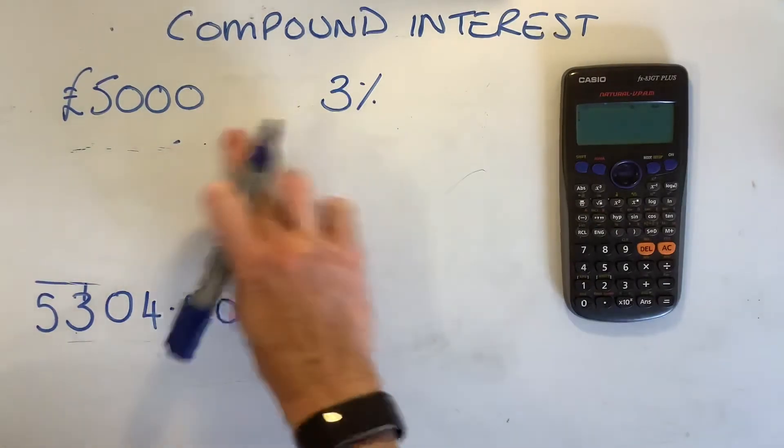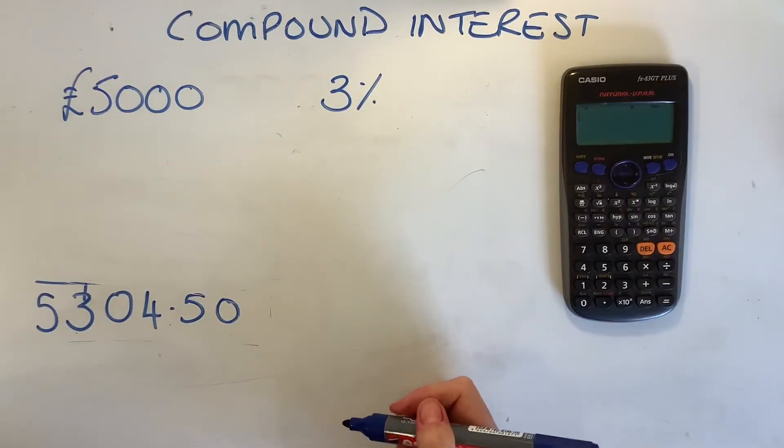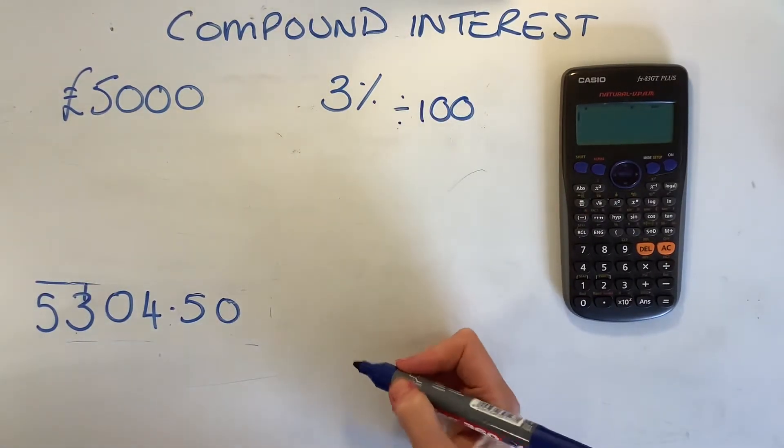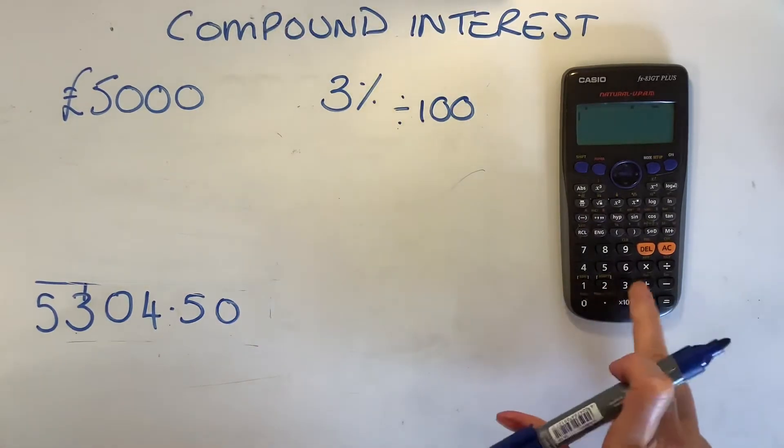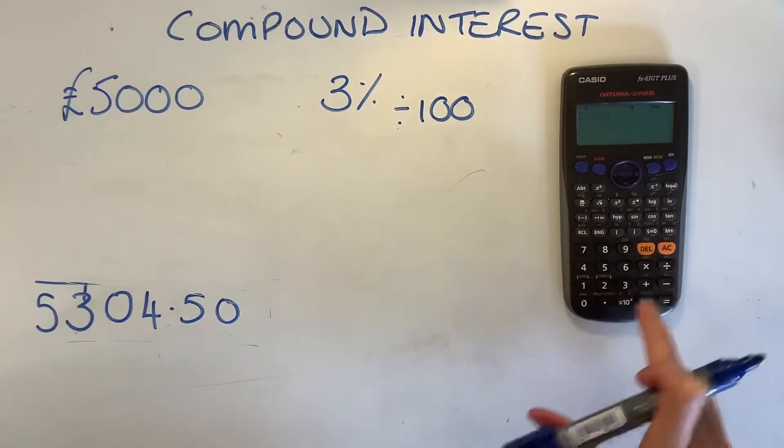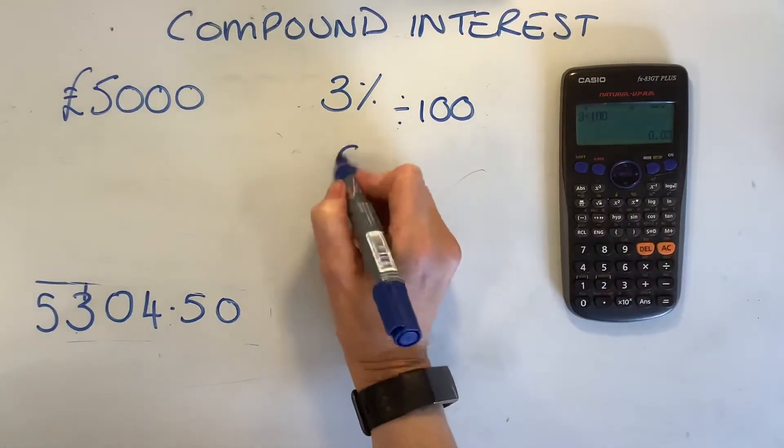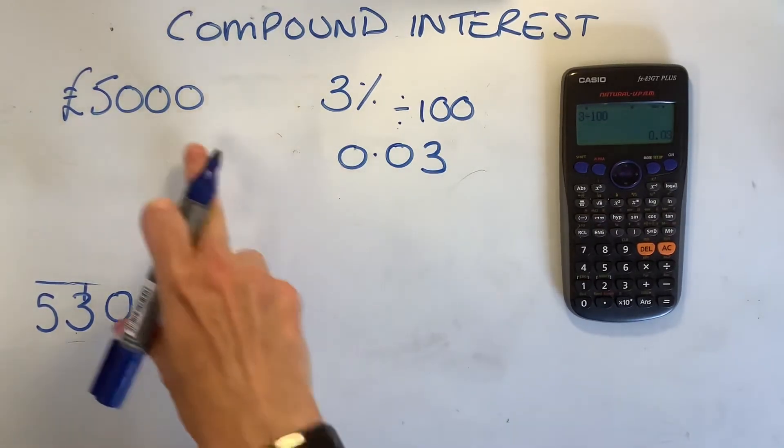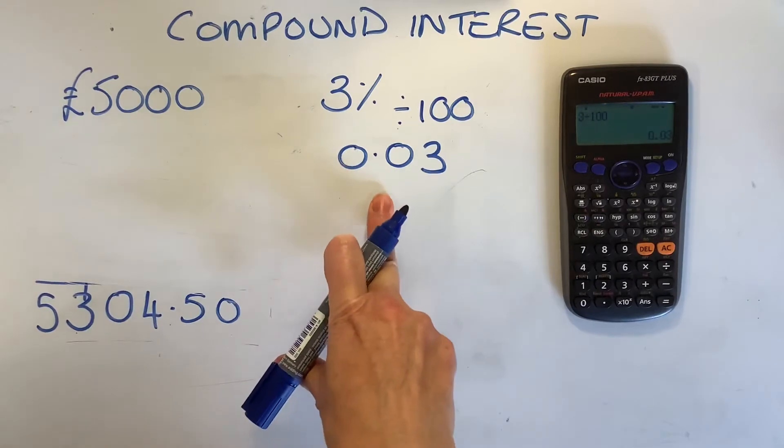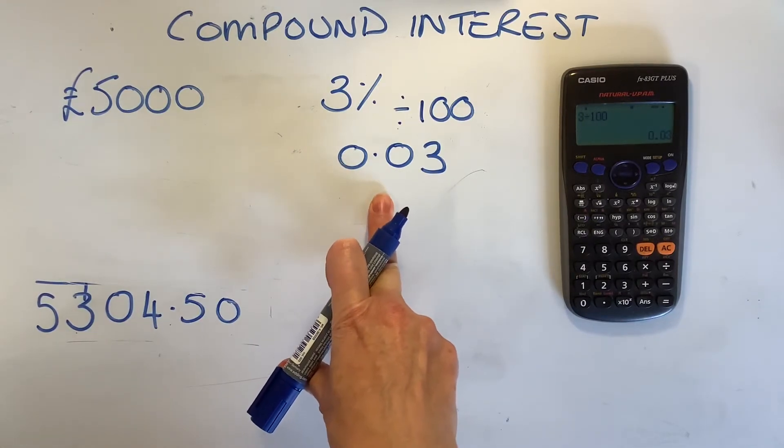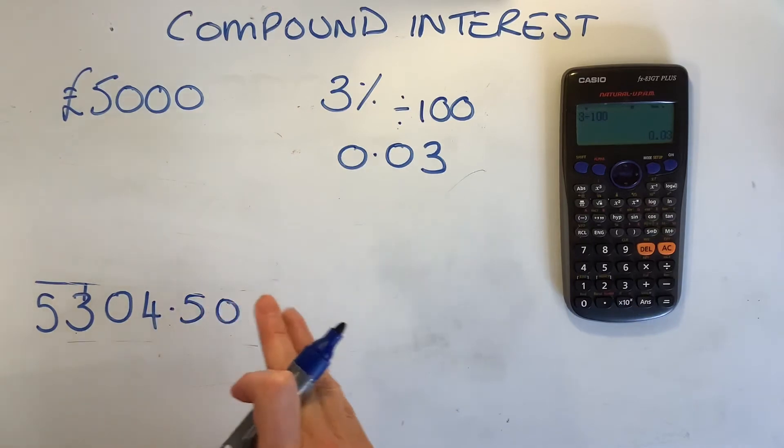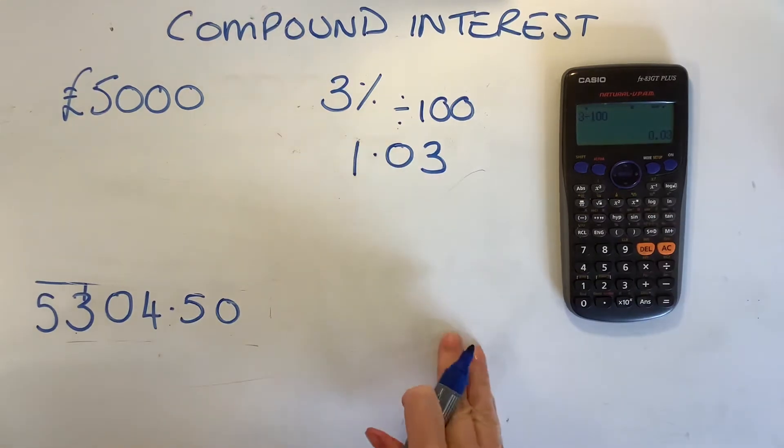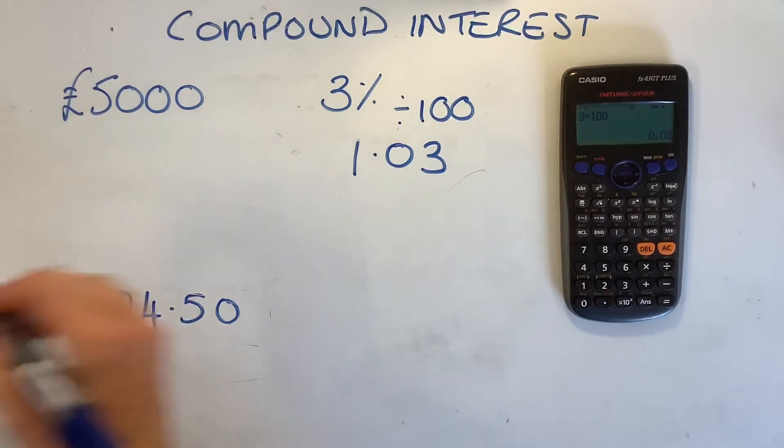3%. Important to know, 3% as a decimal first. I do 3 divided by 100 to convert it into a decimal. I'll do it on the calculator. 3 divided by 100 is 0.03. If you wanted to find 3%, you would do 5,000 multiplied by 0.03. But, if we want to add it on in one go, we'll change this to a 1. Because, if you times anything by 1, it stays the same.